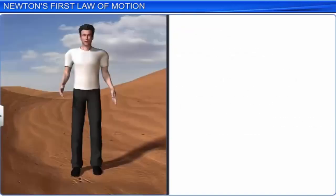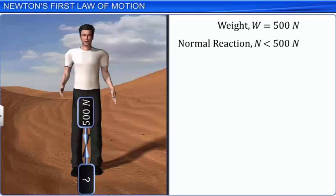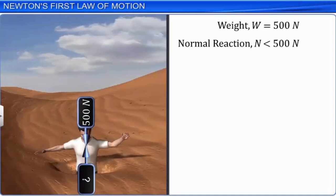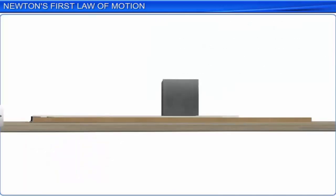Let's consider another situation. What are the external forces acting on you if you are standing in quicksand instead of on firm ground? Your weight is the same, but the normal reaction cannot be equal to 500 Newtons — it is definitely less. You are sinking into the quicksand, which means you have an acceleration vertically downwards, implying there is a net external force acting vertically downward.